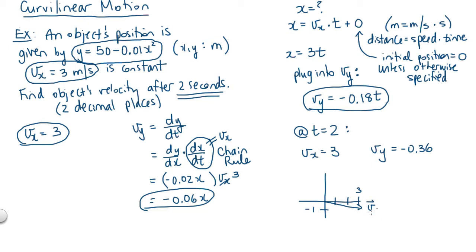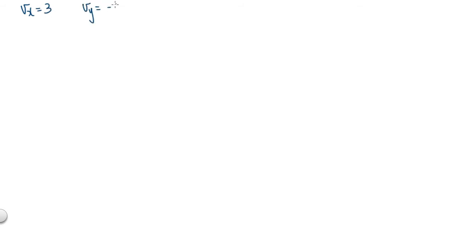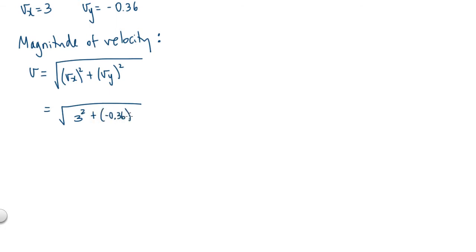To finish the problem, we need to find this vector's magnitude or its length, as well as its direction. At this point we've found vx equals 3, vy equals negative 0.36. Let's start on finding the magnitude of the velocity vector. In any velocity vector problem, we can think about the magnitude as the square root of vx squared plus vy squared. If we plug in these values, we get the square root of 3 squared plus negative 0.36 squared. If we calculate this to two decimal places, we get about 3.02 meters per second. This represents the object's speed.